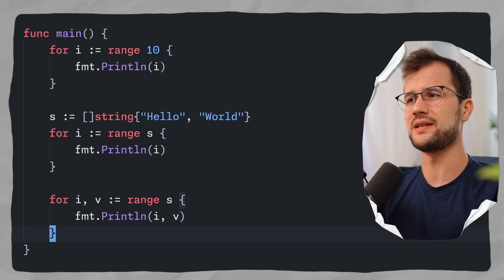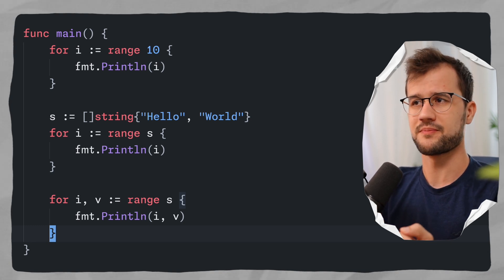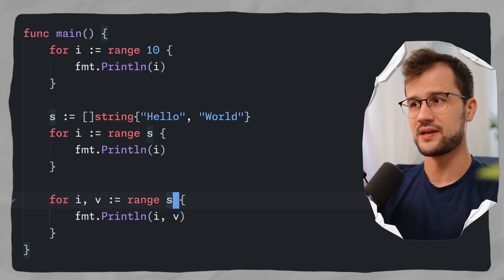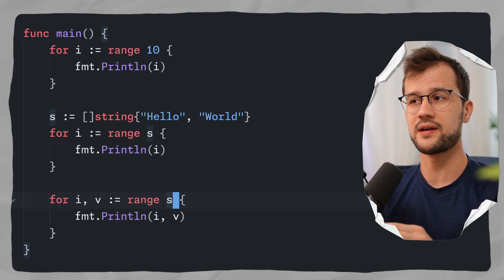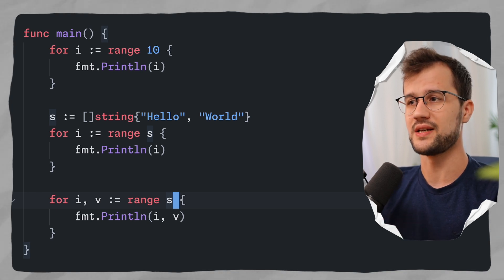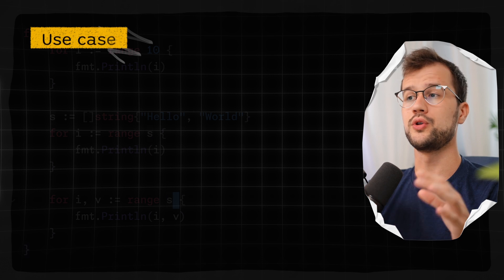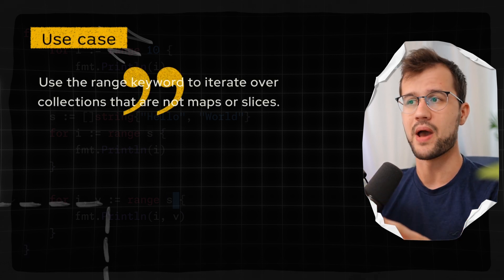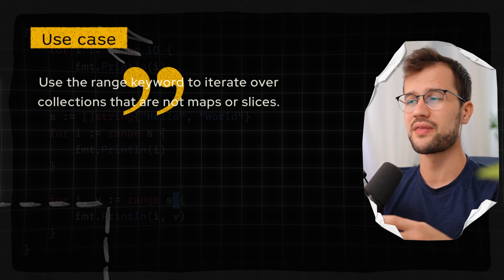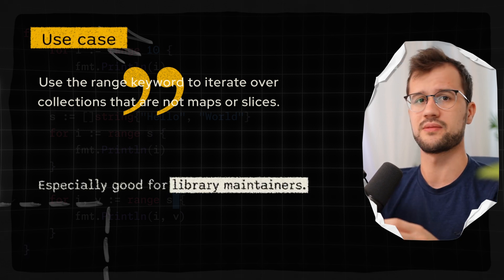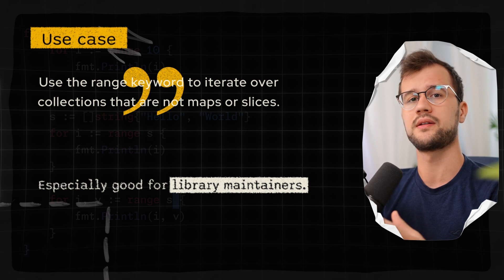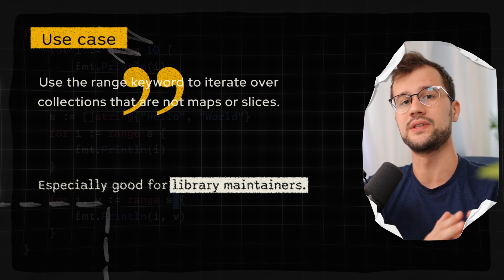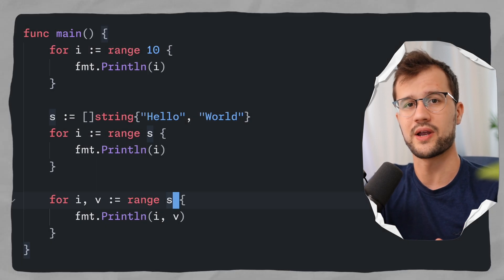The range keyword was mainly used for slices and maps, but now with Go 1.23 we can define custom iterators so that we can use the range keyword with them. A use case would be whenever you want to use the range keyword to iterate over a collection that is not a map or a slice. I personally think you will probably not use custom iterators that much if you are not a library maintainer — you will more likely use them when consuming a library that supports custom iterators.